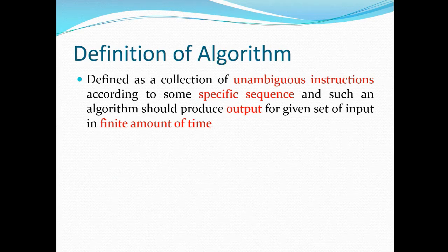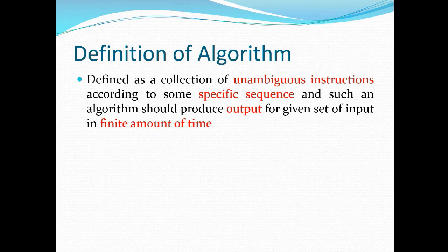What is the definition of an algorithm? An algorithm is defined as a collection of unambiguous instructions according to some specific sequence, and such an algorithm should produce output for a given set of input in a finite amount of time. The key points are that instructions should be clearly defined, precise in order, and the algorithm should produce output within a given amount of time.